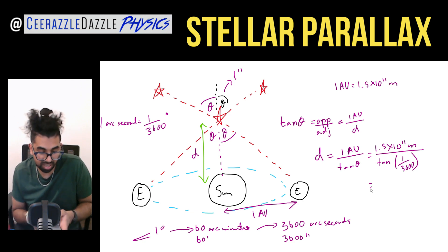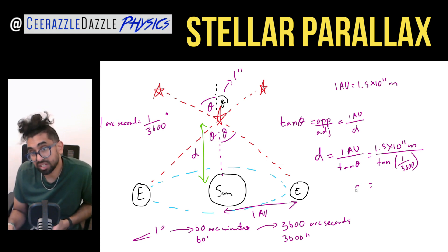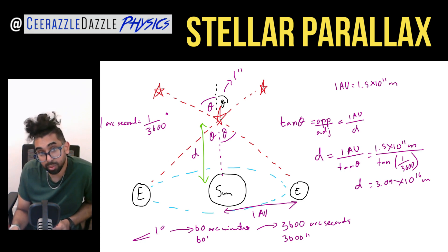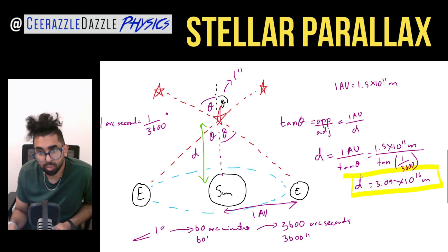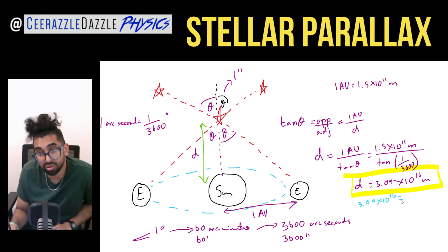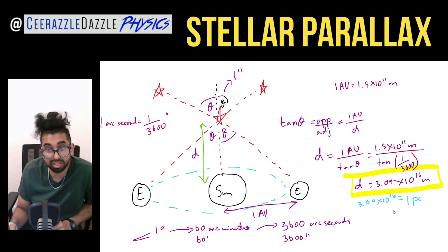So therefore D is equal to one AU divided by tan of the angle theta. That's 1.5 times 10 to the power of 11 meters, divided by tan of one arc second, which is one over 3,600 degrees. What's the distance going to be? 1.5 times 10 to the 11 divided by tan of one over 3,600. The answer is D is actually going to be equal to 3.09 times 10 to the power of 16 meters. So that distance — how far away that star is from the sun — equals 3.09 times 10 to the power of 16 meters.